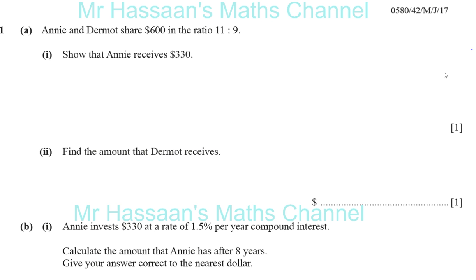Annie and Dermot share $600 in the ratio 11 to 9. Show that Annie receives $330. When they give you a question like this, you have to make sure that you show your steps very clearly, because it already gave you what the answer is. So you have to make the examiner realize that you know what you're doing.